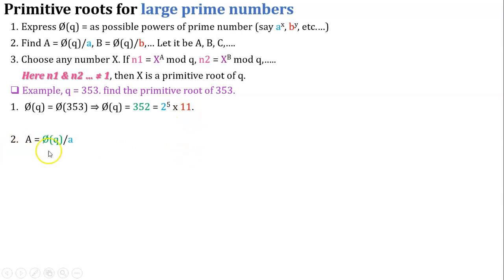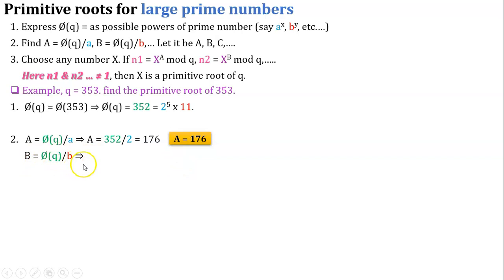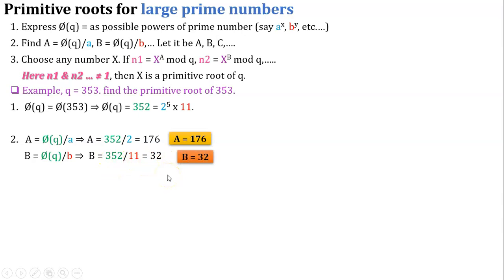For step 2: capital A equals phi(q) divided by small a. Here phi(q) is 352 and small a is 2, so capital A equals 352 divided by 2 equals 176. Next, capital B equals phi(q) divided by small b. Here phi(q) is 352 and small b is 11, so capital B equals 352 divided by 11 equals 32.